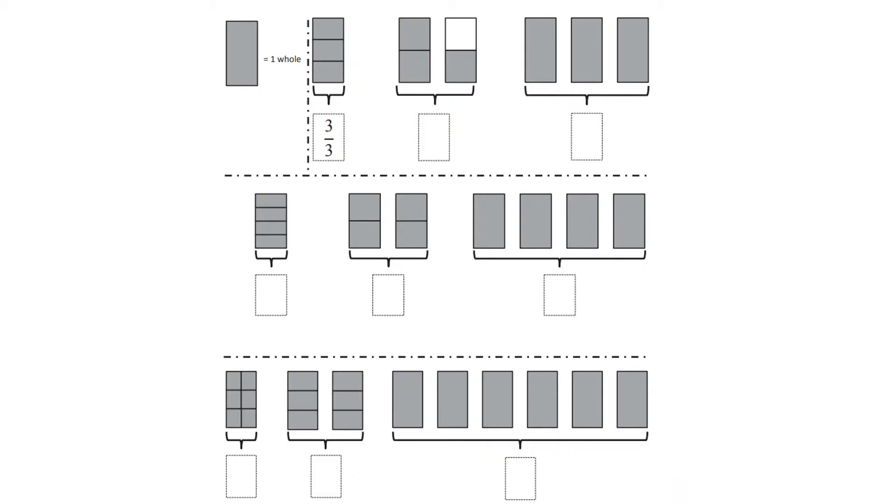So for these first problems, what we're going to be doing is, as you can see, we have one whole thing right here. It equals one whole, which equals 3 thirds. And what you're going to do is tell me how much each of these equals. So for example, this is one, two, three shaded, but they're halves, so it's three halves. So take your time to do this.